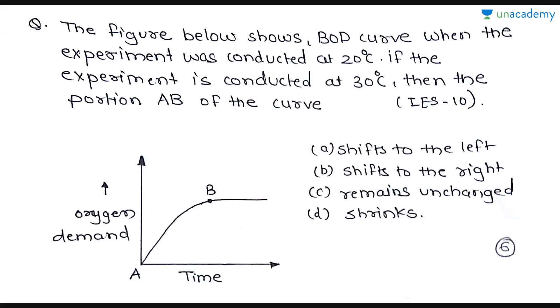Next question is, the figure below shows BOD curve when the experiment was conducted at 20 degree Celsius. If the experiment is conducted at 30 degree Celsius, then the portion AB of the curve: option A shifts to the left, option B shifts to the right, option C remains unchanged and option D shrinks. This question was asked in IES 2010.